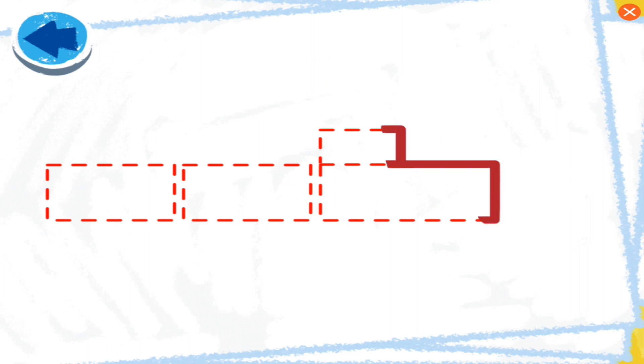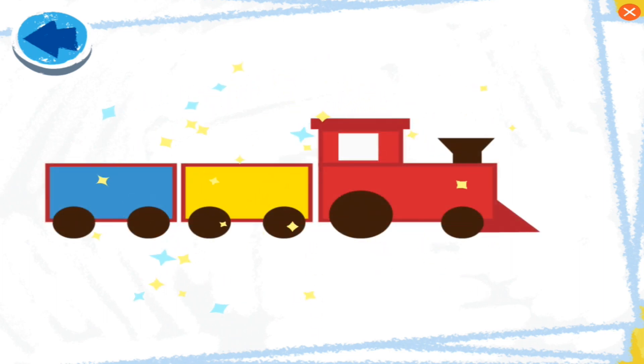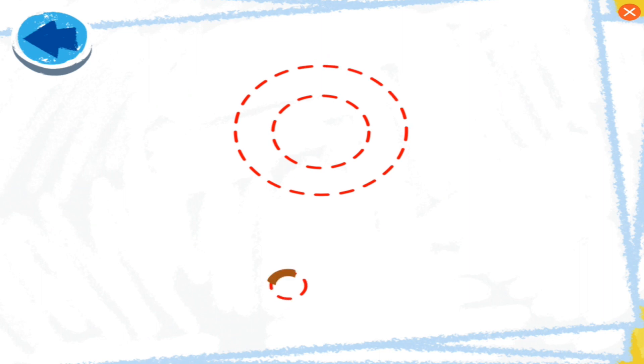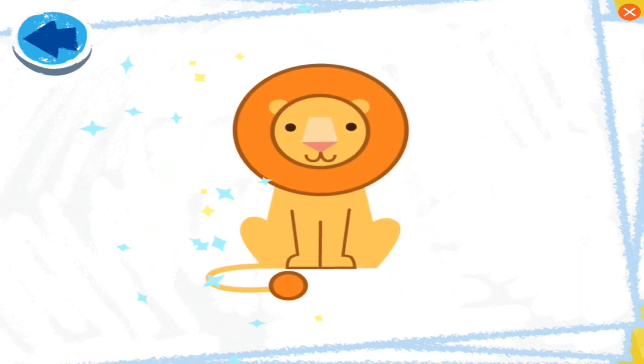This picture has rectangles! Boy, Elmo wonders what it is! Nice rectangle tracing! Elmo loves making objects! This picture has circles! Boy, Elmo wonders what it is! Hey, it's a lion!